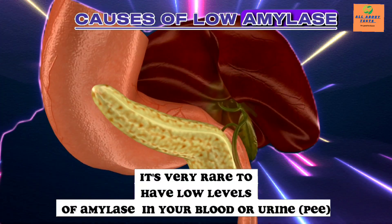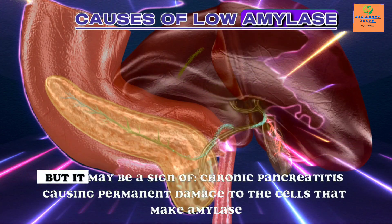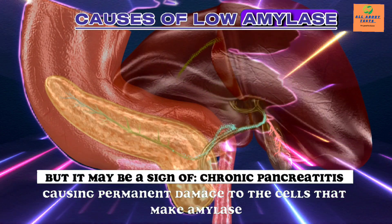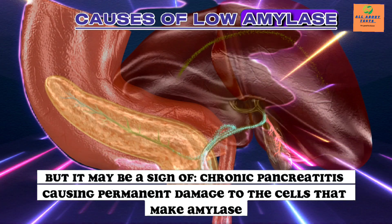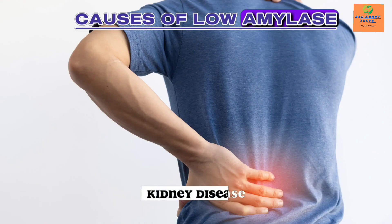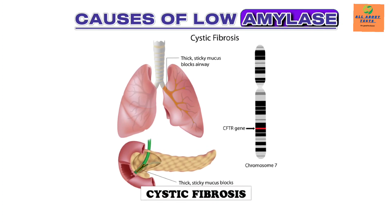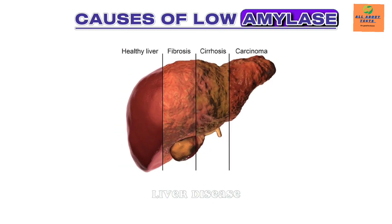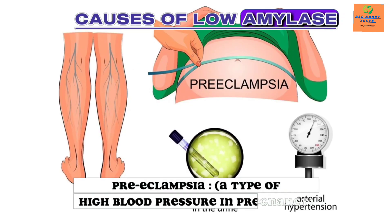Causes of low amylase: it is very rare to have low levels of amylase in your blood or urine, but it may be a sign of chronic pancreatitis causing permanent damage to the cells that make amylase, kidney disease, cystic fibrosis, liver disease, or preeclampsia — a type of high blood pressure in pregnancy.